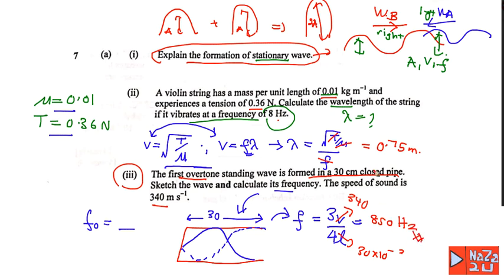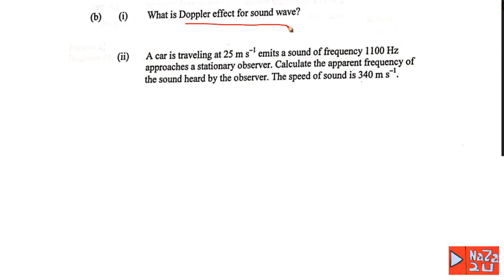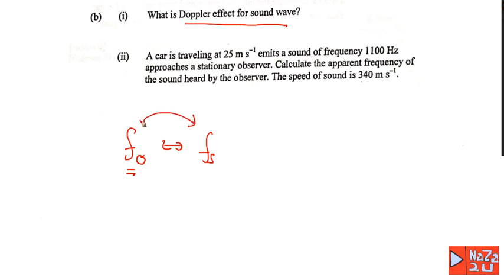Continuing to question b: what is the Doppler effect for sound waves? The Doppler effect is the apparent change in frequency. f₀ is the frequency detected by the observer and fₛ is the frequency produced by the source. The Doppler effect describes the apparent change in frequency of sound as a result of relative motion between the sound source and the observer.